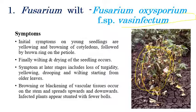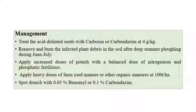The boll is the economic part of cotton where the cotton fiber is packed inside. The Fusarium wilt infected plant will produce fewer bolls. Coming to the management aspects: acid delinting of seeds is a very important practice, where seeds are dipped in concentrated sulfuric acid. Along with that, carboxin or carbendazim at the rate of 4 grams per kilogram can also be recommended.